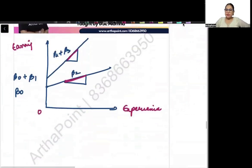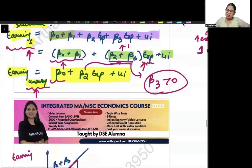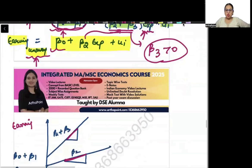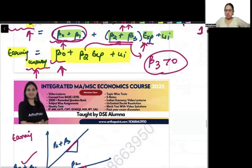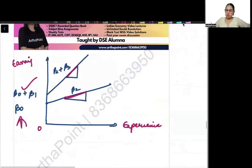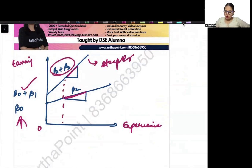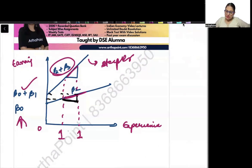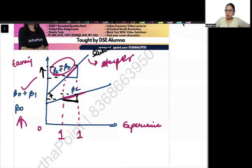This is what I have plotted. When experience is 0, a skilled worker achieves beta 0 plus beta 1 as base salary and an unskilled worker achieves beta 0. The slopes are also different — the skilled worker's line is steeper at beta 2 plus beta 3. So if experience increases by one unit, for an unskilled worker salary increases by beta 2, but for a skilled worker salary increases by more. This is for the skilled worker and this is for the unskilled worker.